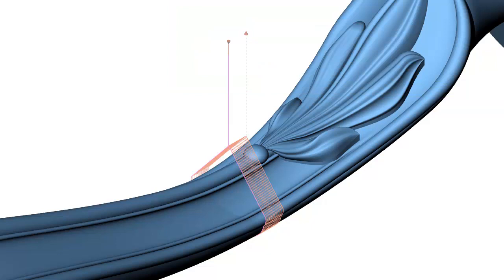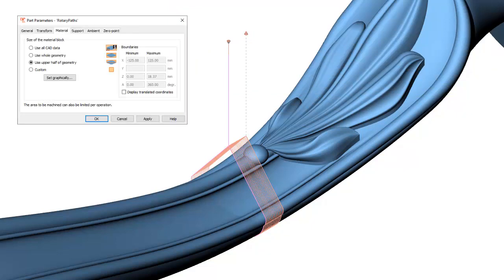When you now calculate toolpaths they will look like this. The top of this roof-like shape is at Z is zero, and the material below the red toolpath lines won't be removed.